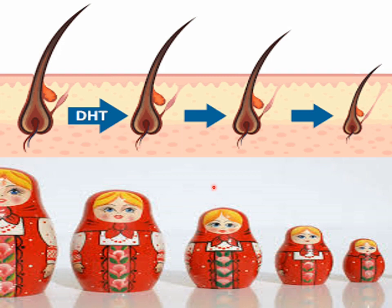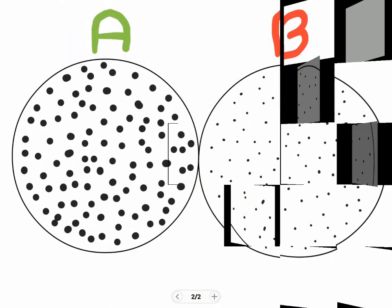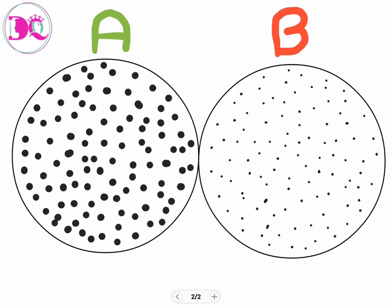Combined, there is miniaturization where it is essentially a smaller copy of a bigger hair follicle. The effect of miniaturization on the scalp can be understood by the next slide. What you are seeing is two circles of the same diameter having exactly the same number of dots. The difference is the diameter of the dots. In circle B you can clearly see the background much more than in circle A. The same thing will occur in your scalp — the scalp will be seen more.